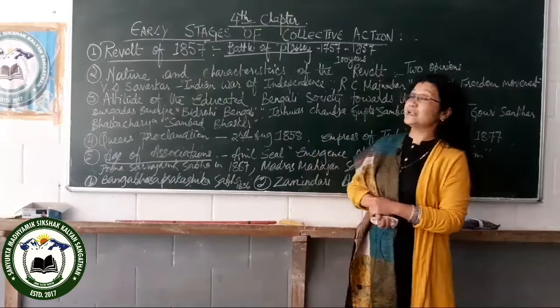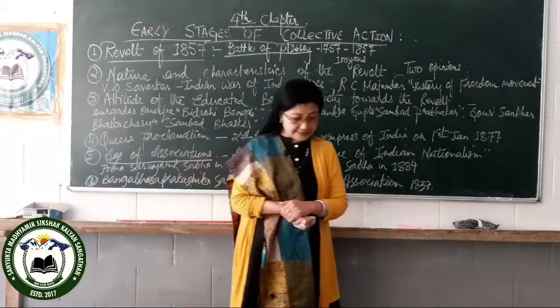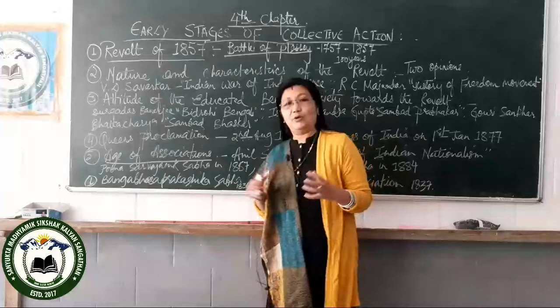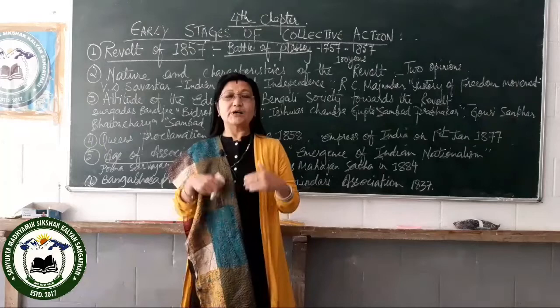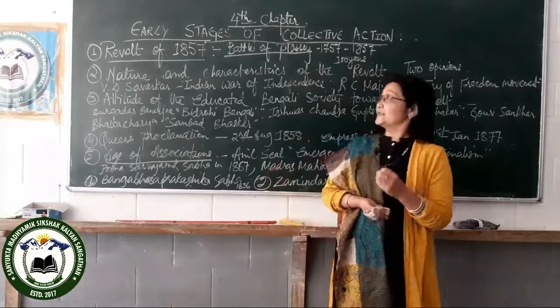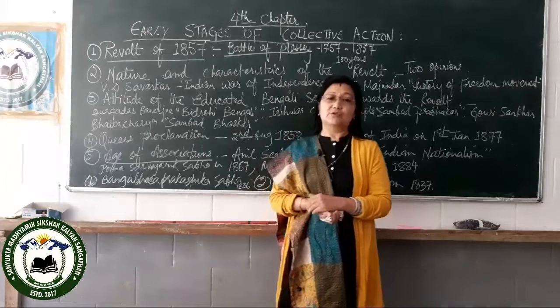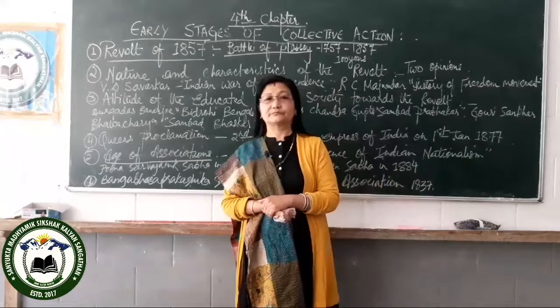In this chapter I will first explain the meaning of collective action. Collective action means when a group of people work unitedly to achieve their goal — to achieve their end. This collective action was taken during the time of the Revolt of 1857, so I will highlight the Revolt of 1857.